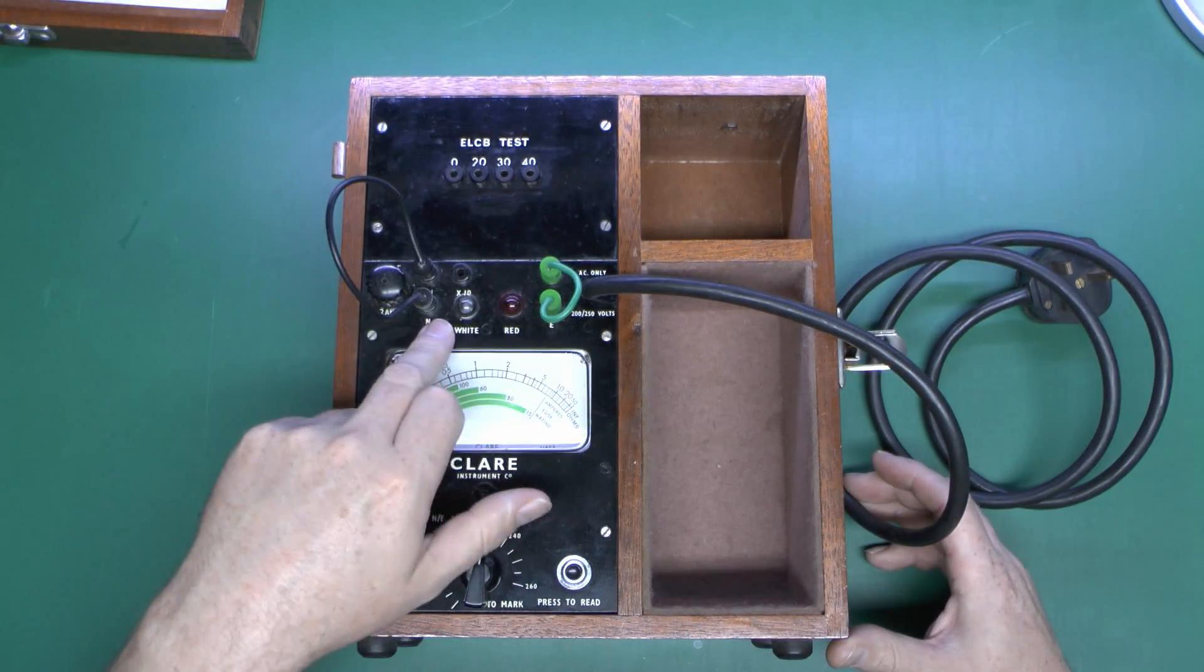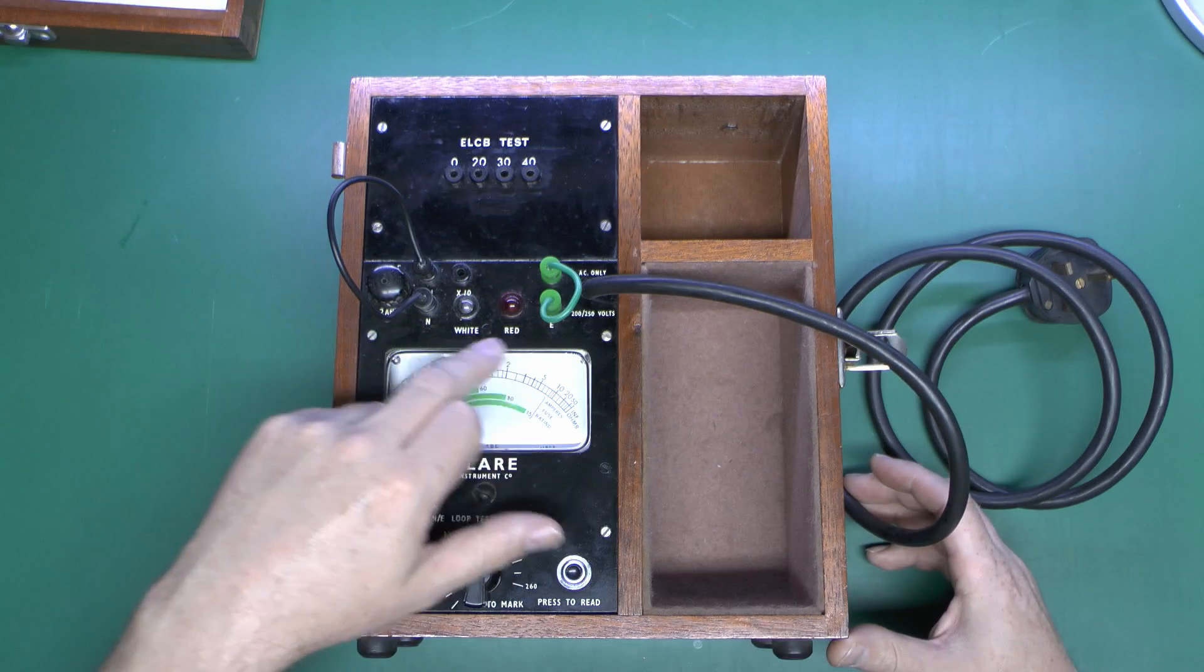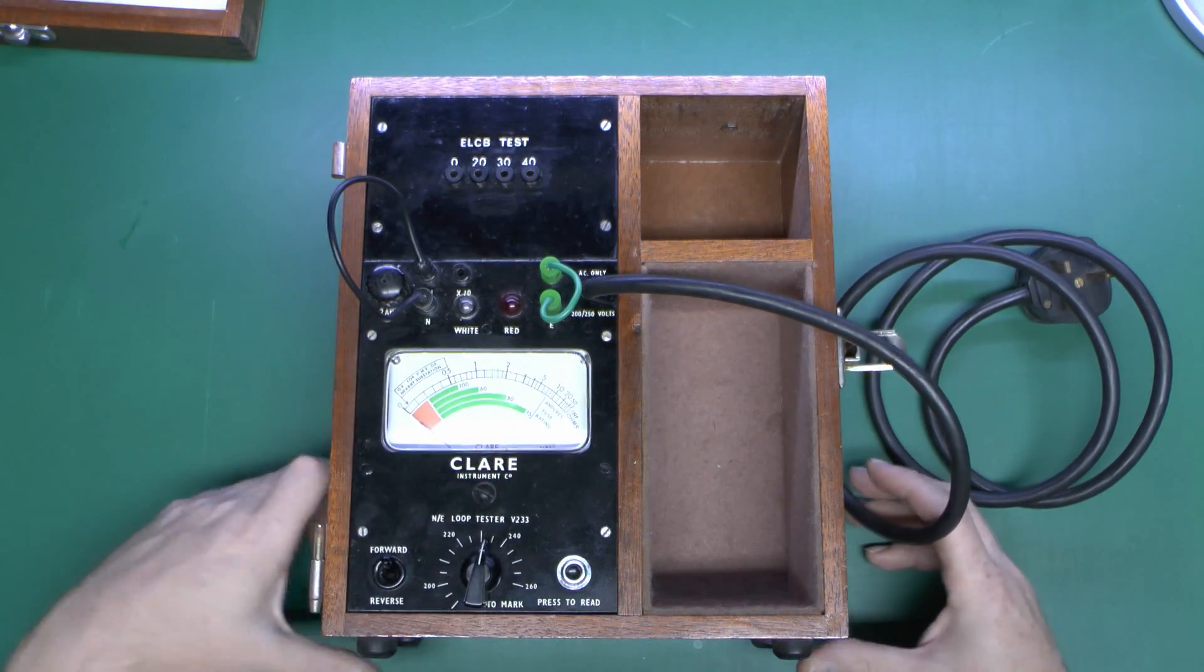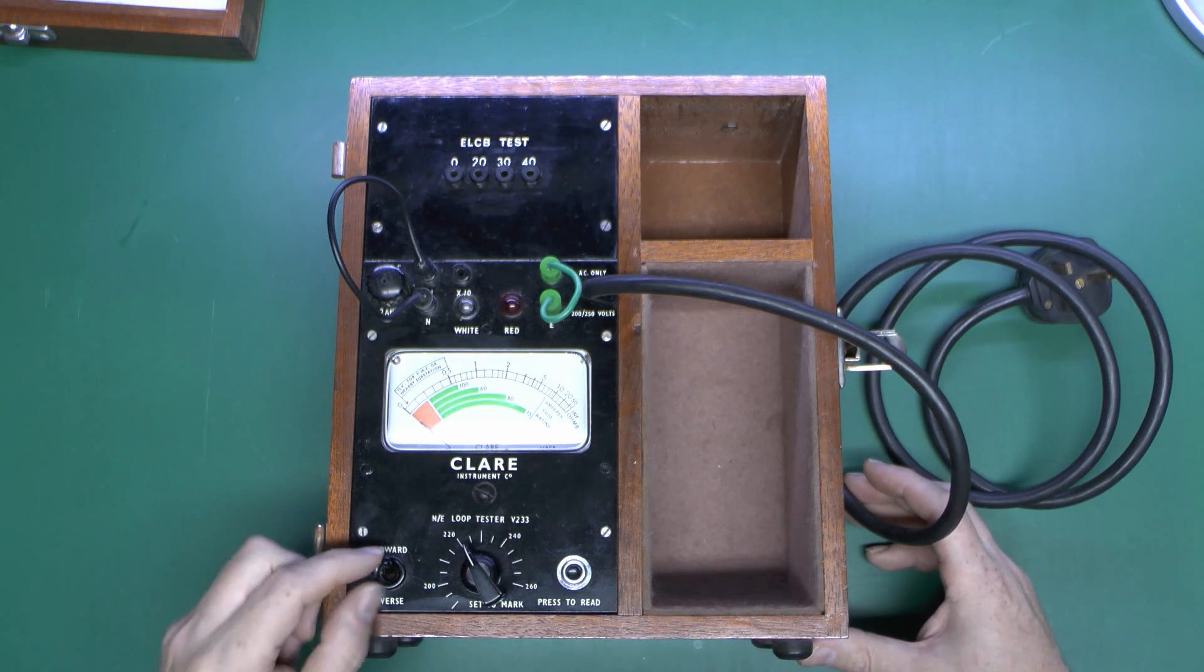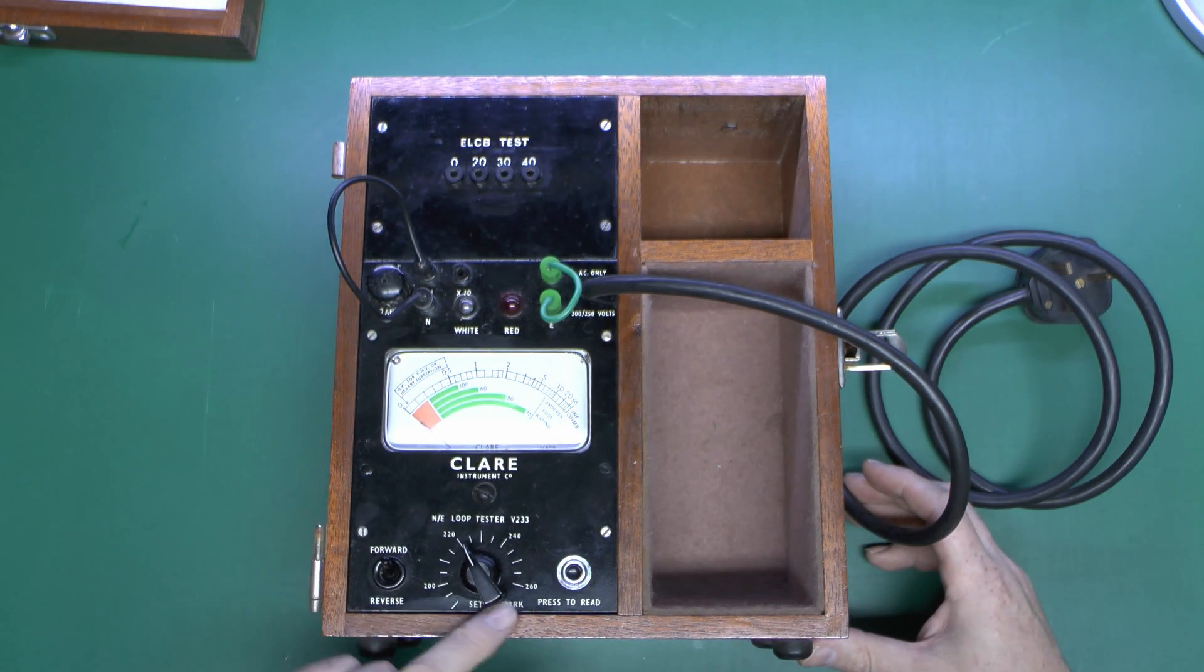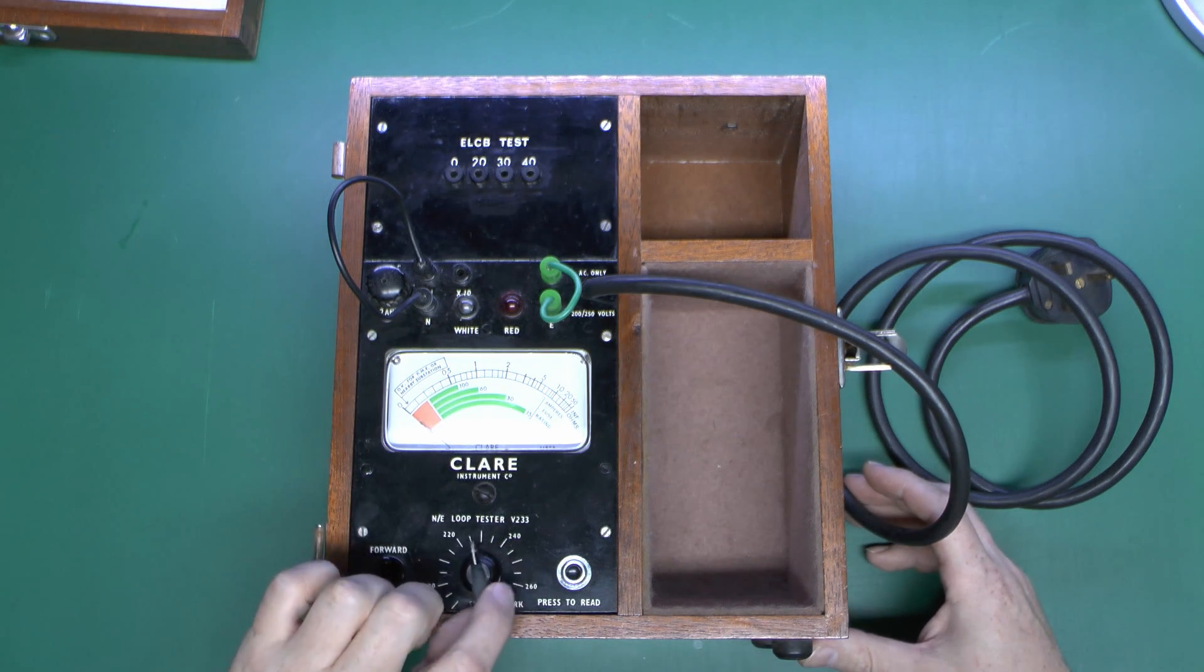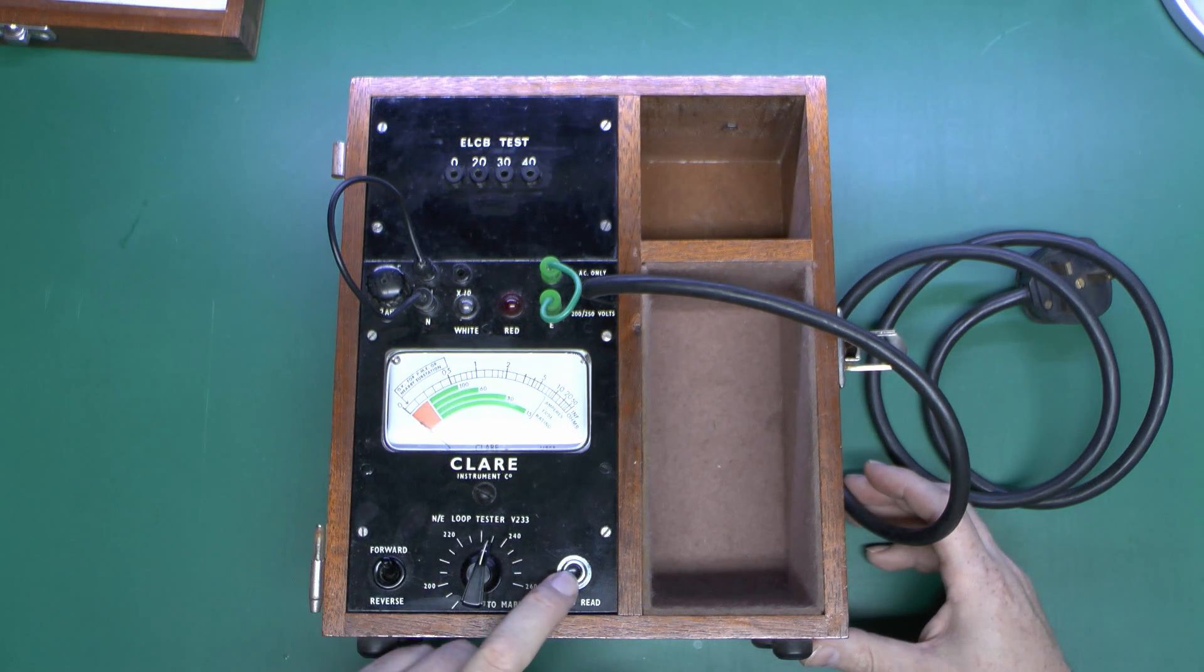Two indicators here which are white and red, and it actually says white and red underneath for those that didn't know the difference. Meter there with the various readings. And at the bottom, forward and reverse, a dial here to set to the appropriate voltage, and the press to read or press to test button.